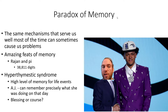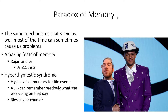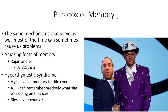The paradox of memory continues: the same mechanisms that serve us well most of the time can sometimes cause problems. There are amazing feats of memory, such as memorizing Pi — 3.14159 to infinity. One person memorized Pi to the 311th digit beyond the 38,000th decimal place, as you can see on screen.